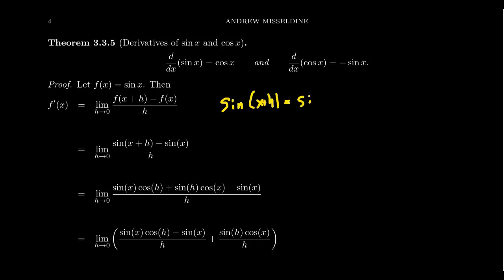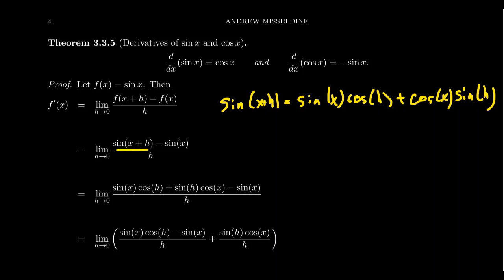The angle sum identity gives us: sine of x plus h equals sine of x times cosine of h plus cosine of x times sine of h. If you didn't have that memorized, that's okay — these are things we sometimes have to look up. This is the appropriate identity we're going to use to expand that trigonometric expression.